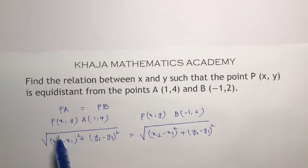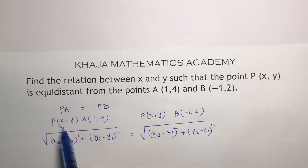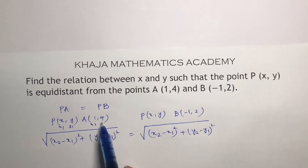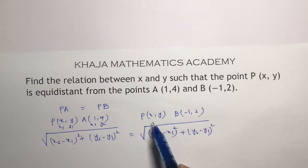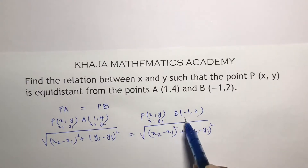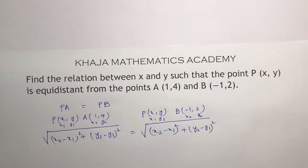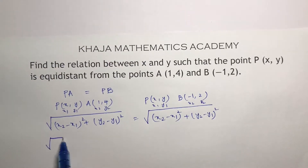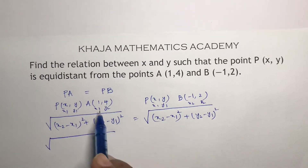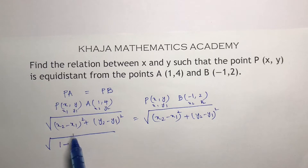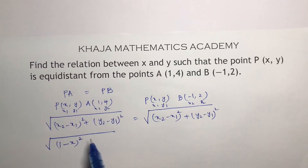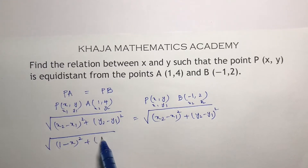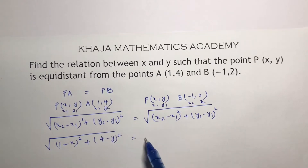Here you can consider these values as X1, Y1, X2, Y2 for both pairs. Substituting the values: X2 is 1 minus X1, which is X whole square, and Y2 is 4 minus Y whole square.